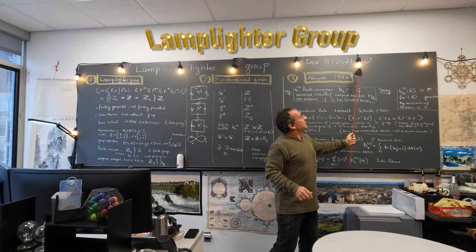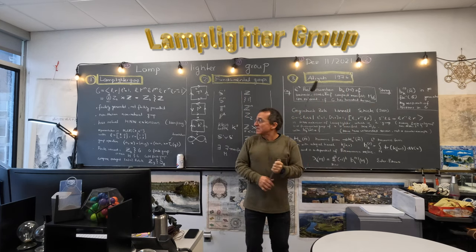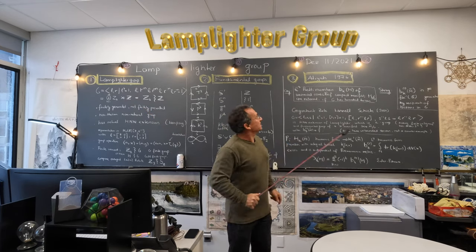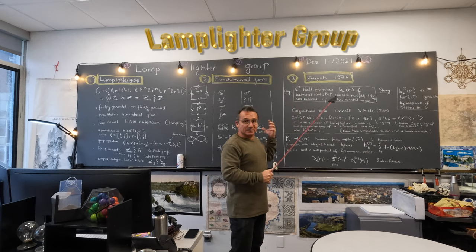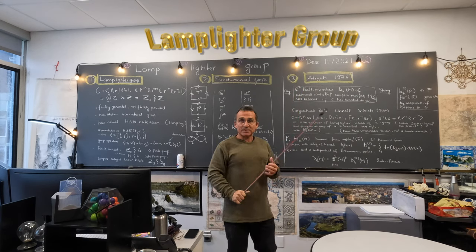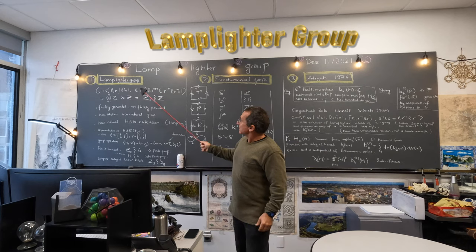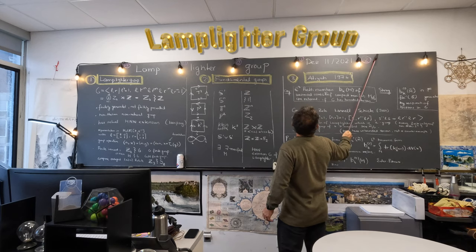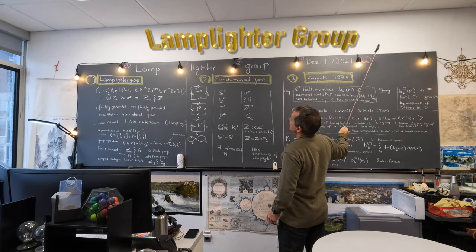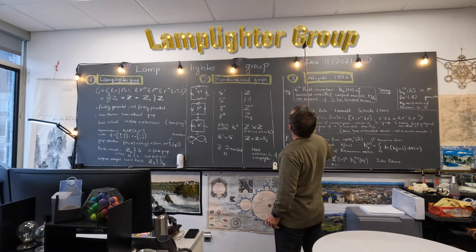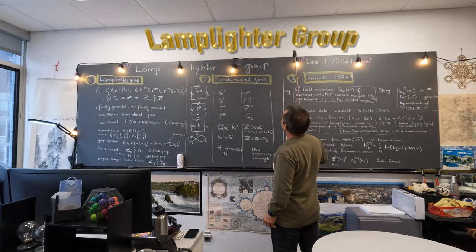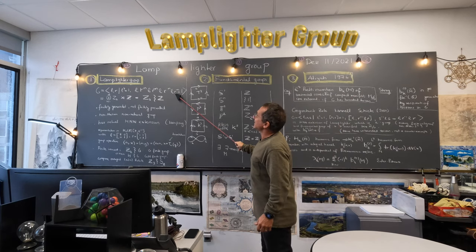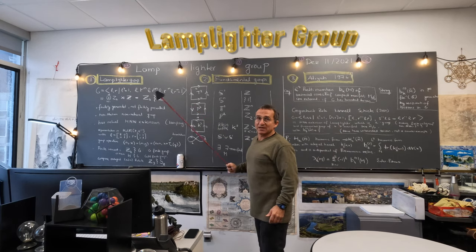Moving right increases and moving left decreases. The rule here tells us that if you do things twice — if you light and unlight a lamp twice — you get the same state again. This means that if you light, move to the right by N, light again, move to the left by N, light again, move to the right by N, light again, and move to the left by N, then you should get the identity.